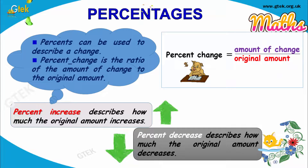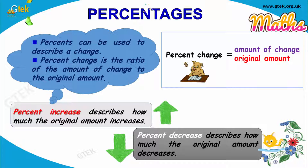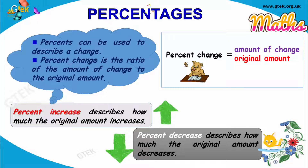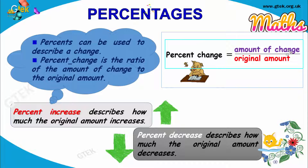Percentage can be used to describe a change. Percent change is the ratio of the amount of change to the original amount. The formula for percent change is: percent change equals amount of change divided by the original amount, which will provide you the percentage change.